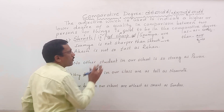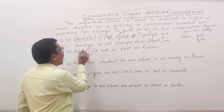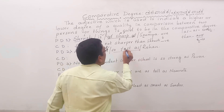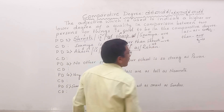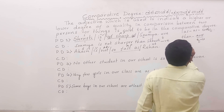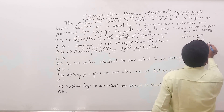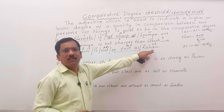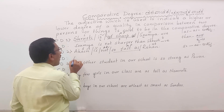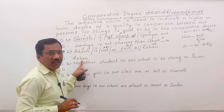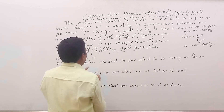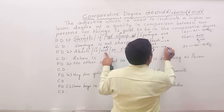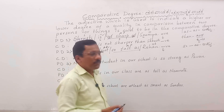Look at the second sentence: Akash is not so fast as Riham. Here, Akash is the subject, 'is' is the verb, 'not' is an adverb, 'so...as fast' is the adjective part, and Riham is the object. So 'so...as' are used here as adverbs. Again, the object of positive degree comes first in comparative degree — Riham. The sentence has begun with a noun and it is negative, so when changed into comparative degree, it becomes positive.